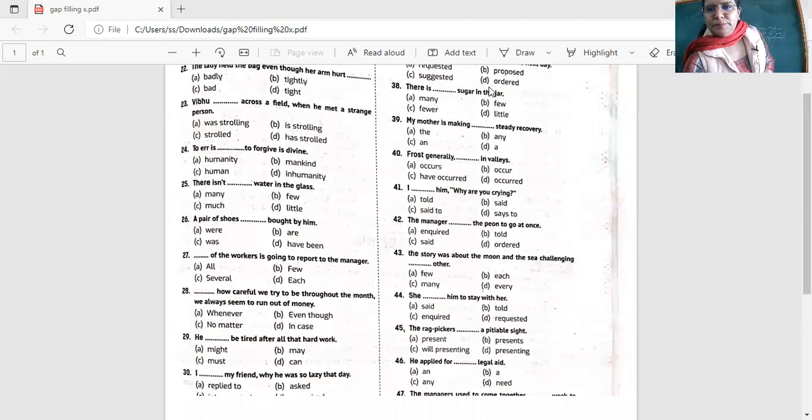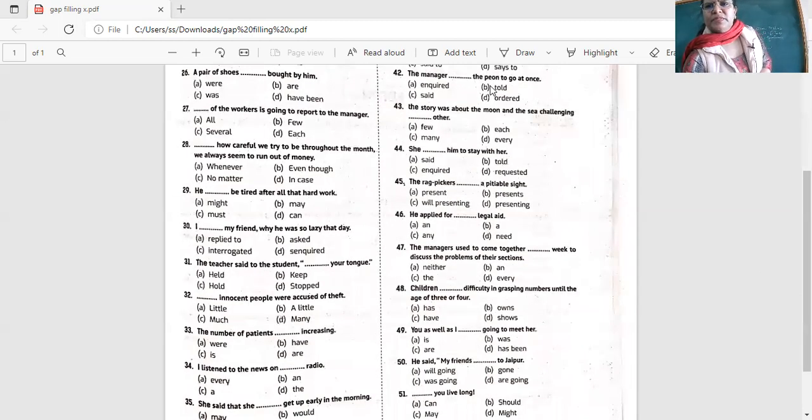Next is, where are we, the story was about the moon and the sea challenging, challenging. This is very basic, simple sentences, right? Which we use in our everyday routine conversation also, right? So the story was about the moon and the sea challenging each other, challenging each other.